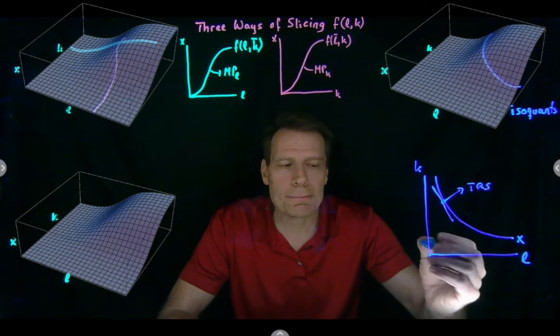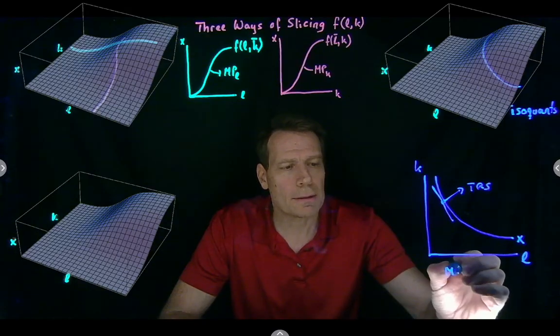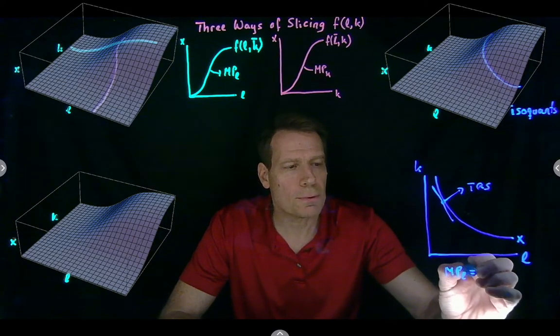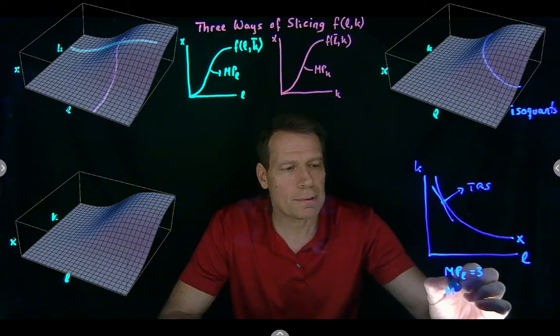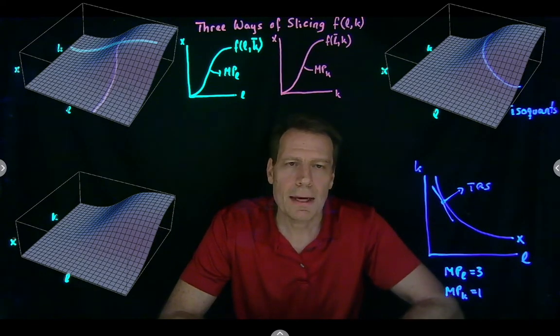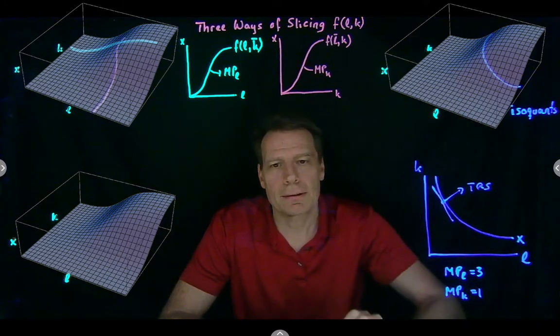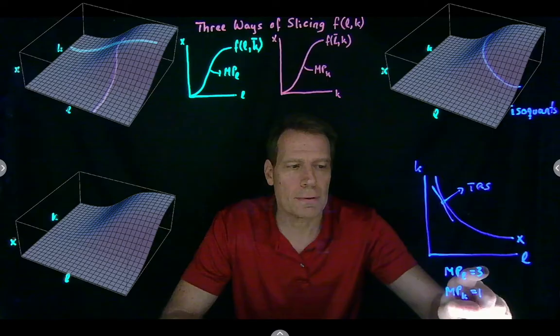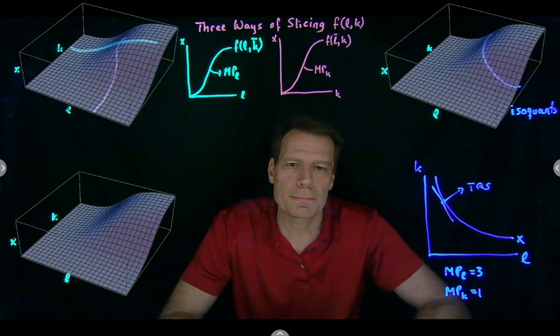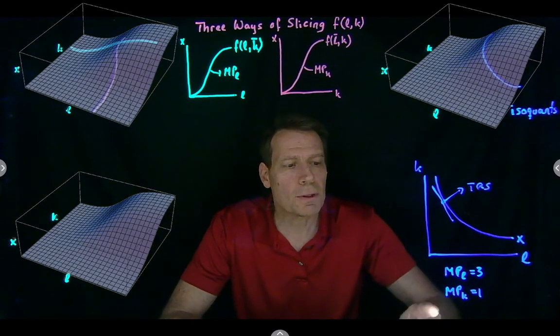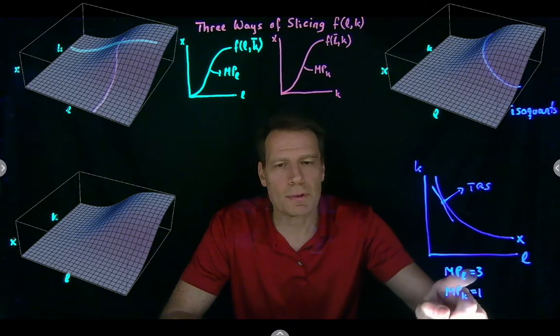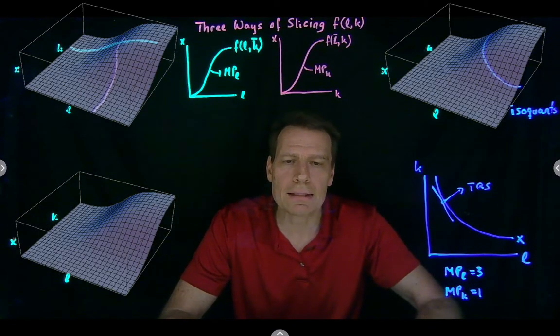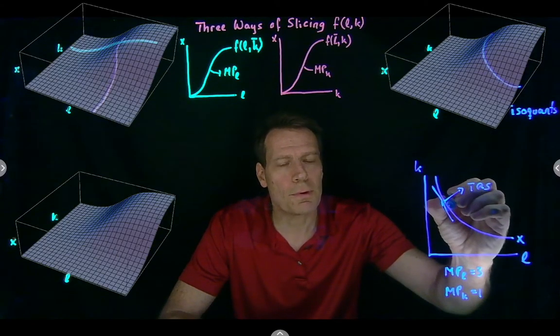Suppose, at that point, the marginal product of labor was equal to 3, and the marginal product of capital was equal to 1. That would mean that at that point on the production function, labor is three times as productive as capital, which means that we could replace three units of capital with one unit of labor, and continue to produce exactly the same as we did before. In other words, we could go down by 3 and over by 1.